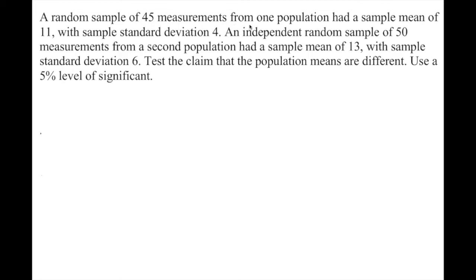45 measurements from one population had a sample mean of 11 with sample standard deviation of 4, and an independent random sample of 50 measurements from a second population results in a sample mean of 13 with standard deviation of 6. Test the claim that the population means are different using a 5% level of significance.